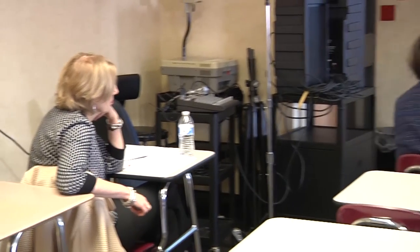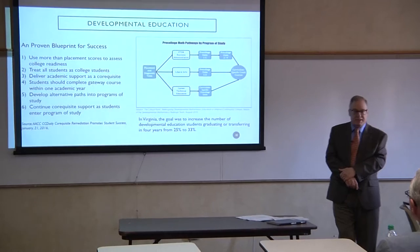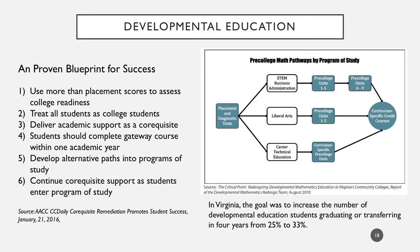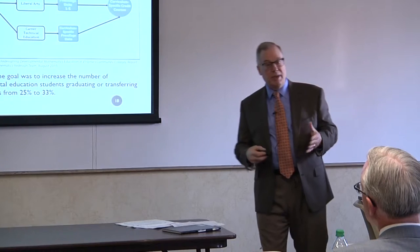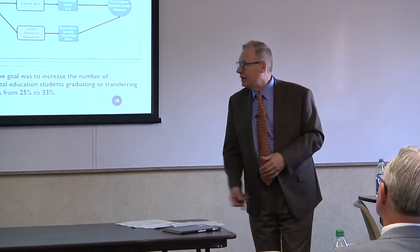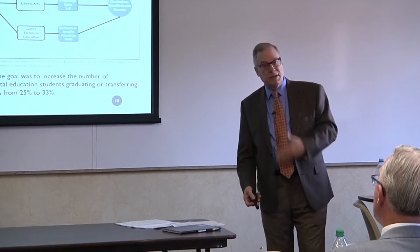As we go through this, states have different methodologies. This is a proven blueprint for success. In Virginia, placement and diagnosis for your math sequence really depends on your particular major or program of study — not all students are required to take all college units in math. If you're in STEM or business administration, you take units one through five. If you're in career and technical education, you have curriculum-specific pre-college units that may or may not include algebra or advanced math, depending on what you're going to study.